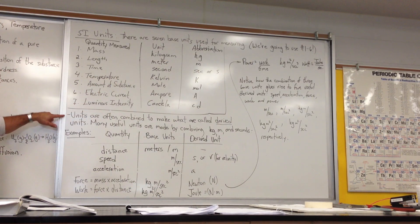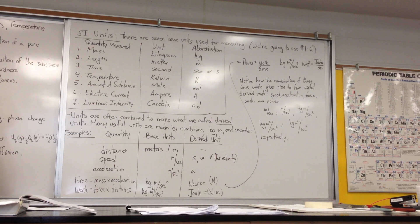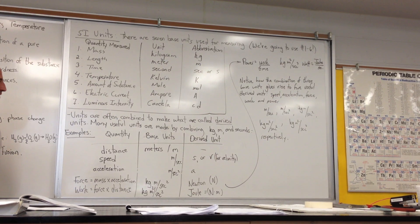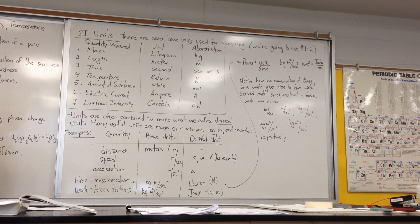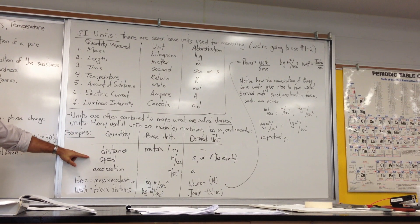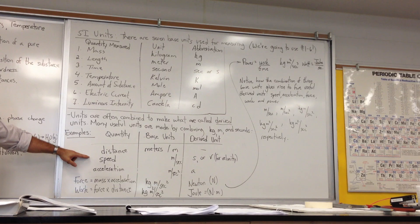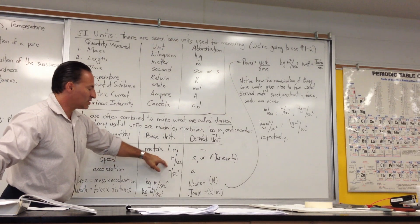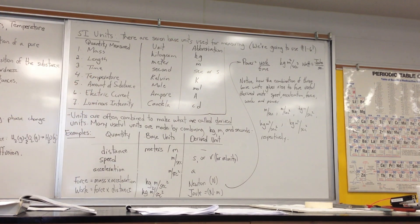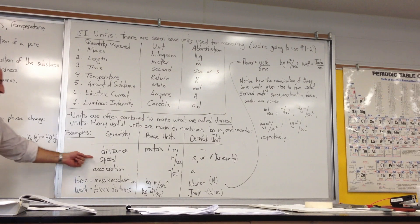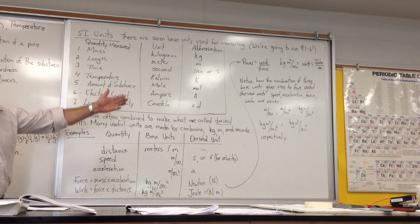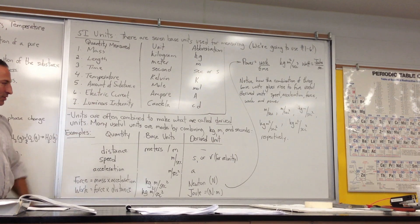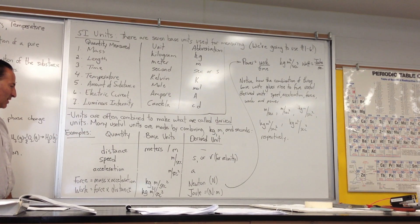Now, the more important idea here is that units are often combined to make what they call derived units. Many useful units are made by combining kilograms, meters, and seconds. I'll give you several examples here. If you want to measure speed, you use units of meters and seconds. So when something is traveling at 30 meters per second, you've talked about speed. If you talk about velocity, you're saying speed with a direction. So velocity is a vector, which you're going to learn about in math classes as well.